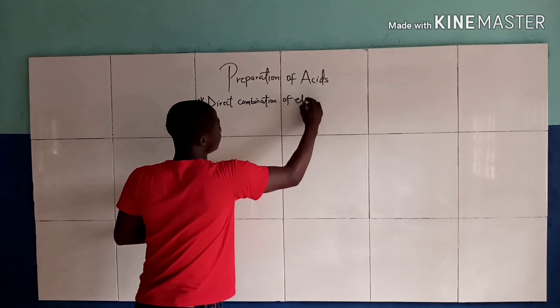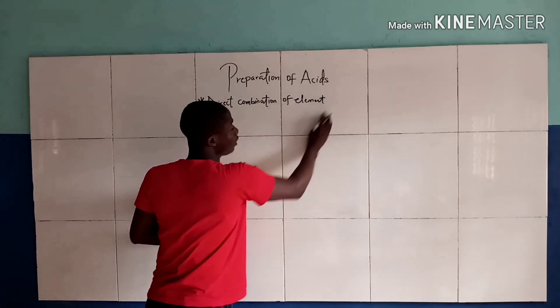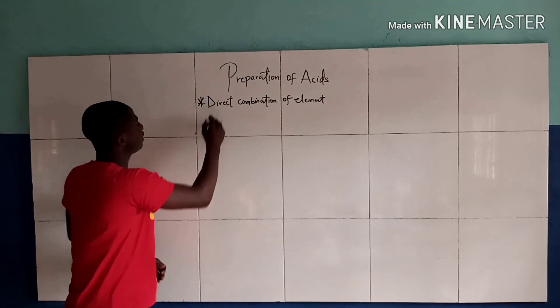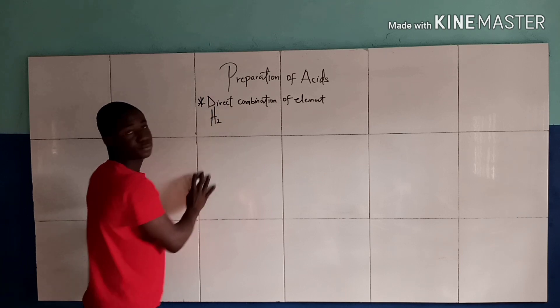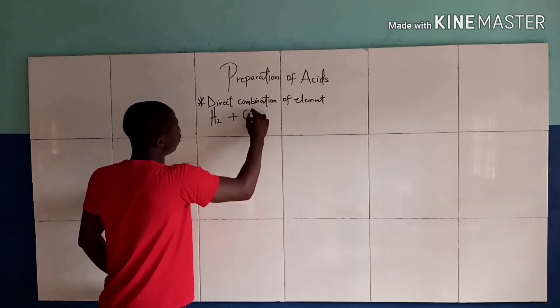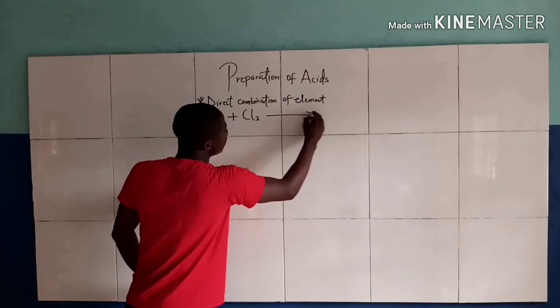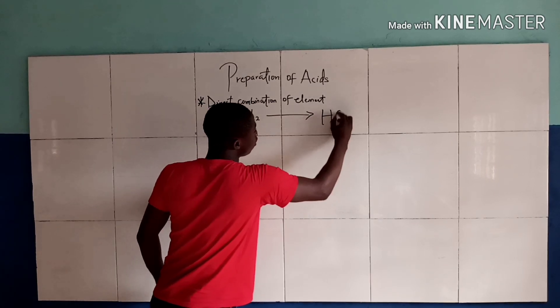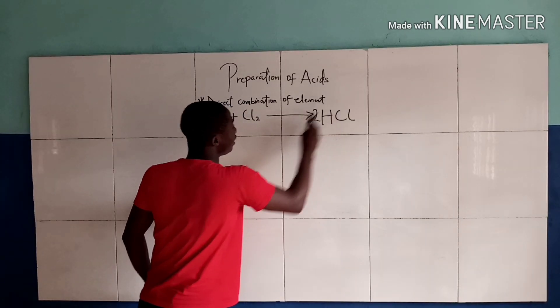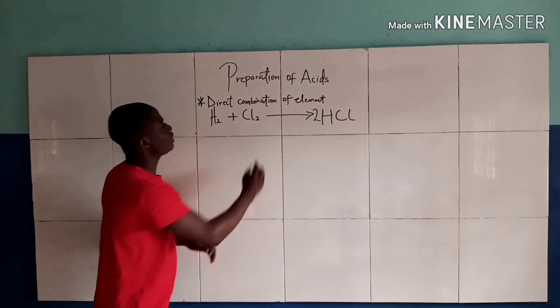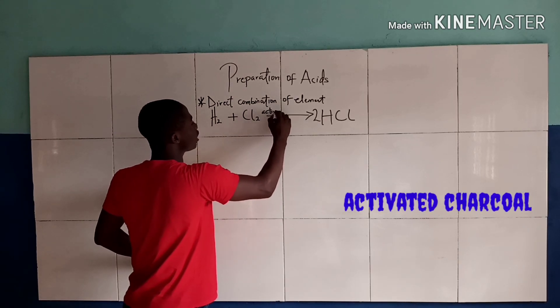Now let's take an example. When hydrogen reacts with chlorine, it gives us hydrochloric acid. The catalyst being used here is called activated charcoal.